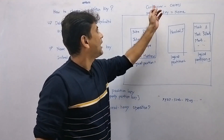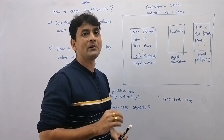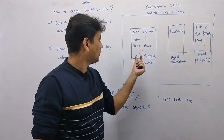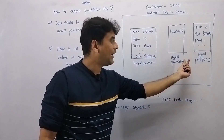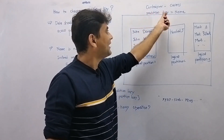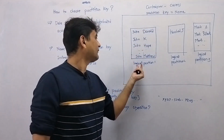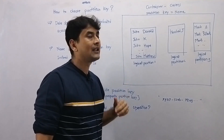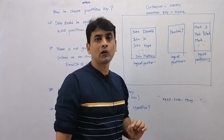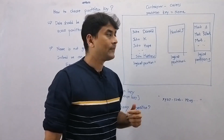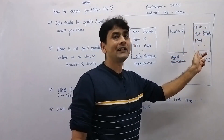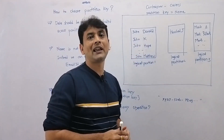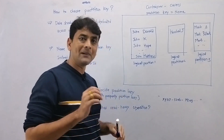Imagine we have a container called C-users that contains information about users. We have three logical partitions in this container. Here we have selected the partition key as name. In the first logical partition, imagine we have 50 records with name John. In the second logical partition, we have only one record with name Herschel. In the third logical partition, we have 10 records with name Mark. The data is not equally distributed across these partitions, so name is not a good partition key.